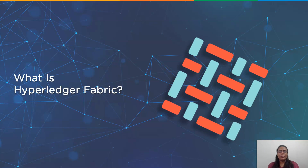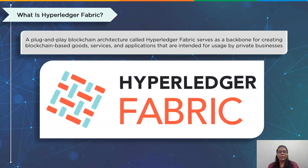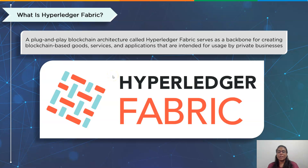So what is Hyperledger Fabric? The Linux Foundation launched Hyperledger Fabric in 2015 as an open source permissioned blockchain technology. It is a general purpose modular framework that provides distinctive identity management and access control features. As a result, it is appropriate for a range of business applications including trade finance, loyalty and reward programs, track and trace of supply chains, and clearing and settlement of financial assets. It enables plug-and-play compatibility for components like membership services and consensus.